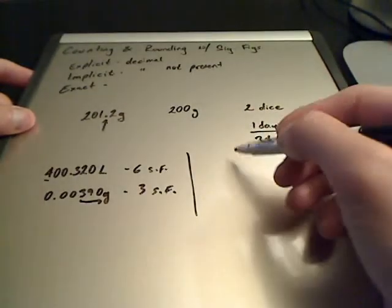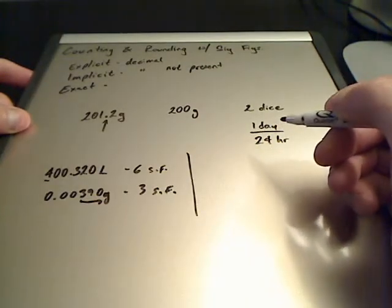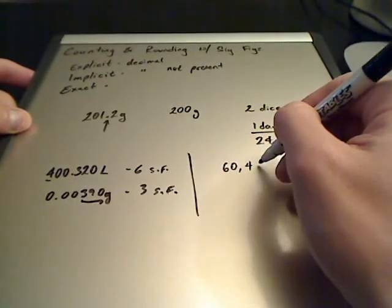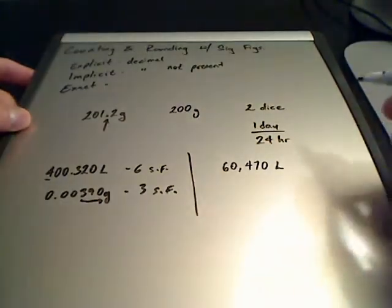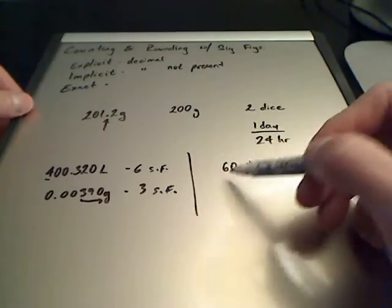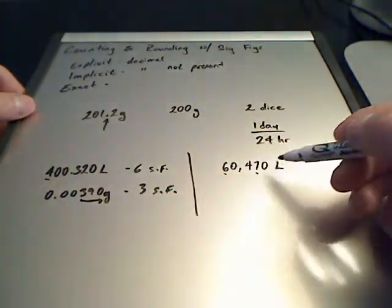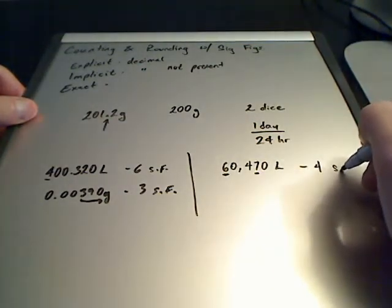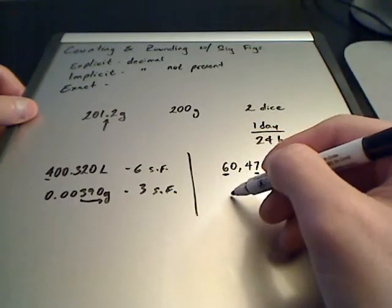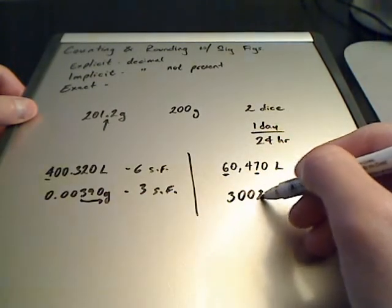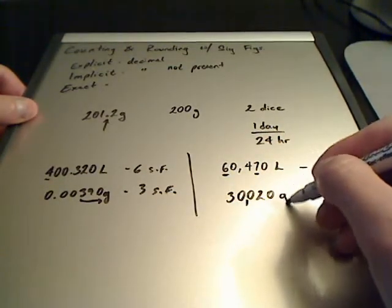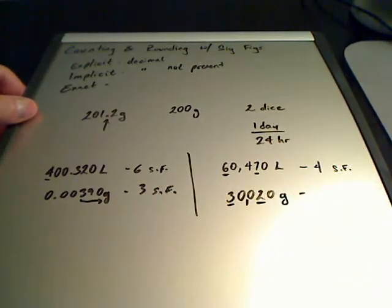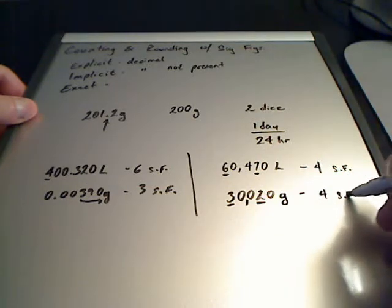Let's move to implicit. Implicit — you always start with your first non-zero, never start with any zeros in the front. Let's say we do 60,470 liters. Implicit because no decimal is present. You start with your first non-zero, you always end with your last non-zero, and you count everything in between — from the 6 to the 7 — giving a total of four significant figures. Another example: 30,020 grams. Start with your first non-zero, the 3, end with your last non-zero, the 2, giving four significant figures.